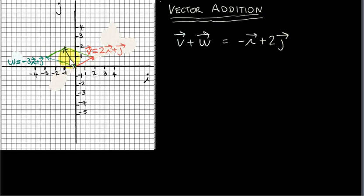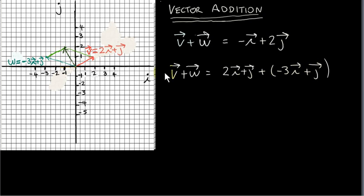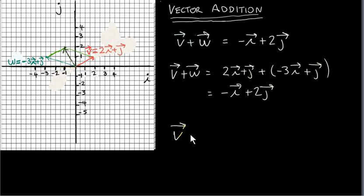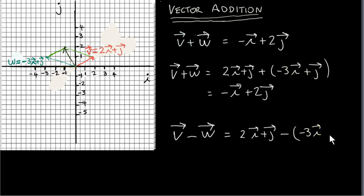We can do that by just counting squares on this diagram. The very useful thing about using the ij plane to represent vectors is we can add them without using the diagram. So this is vector v and this is vector w. We just combine the i components together: 2i plus minus 3i gives minus 1i. Then we combine the j components: 1j plus 1j gives plus 2j.